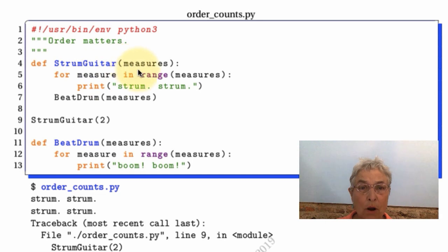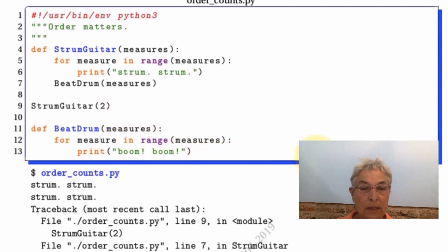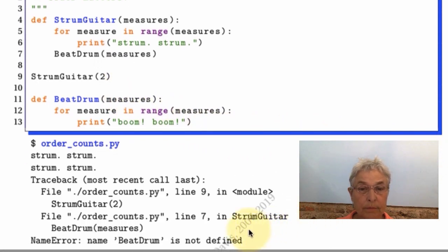Here I have a function StrumGuitar and I have BeatDrum calling that function. Here I'm calling StrumGuitar putting in two measures going around two times. Well this is an interpreter, it has not yet seen that word BeatDrum. So what comes out is a name error: name BeatDrum is not defined. When you get a name error coming out of your code, almost always you want to fix your code. You're not going to catch that. That means there's something wrong with the code, and usually it's a misspelling.